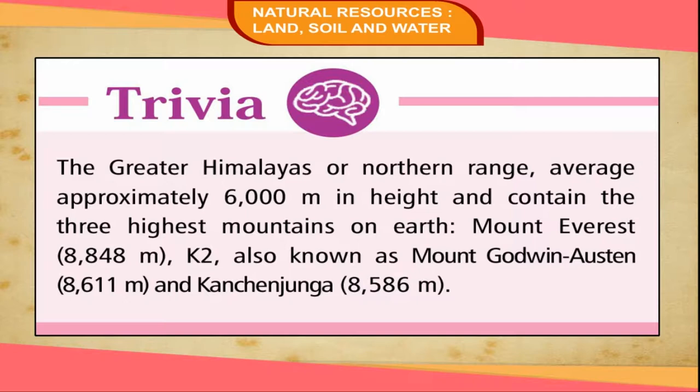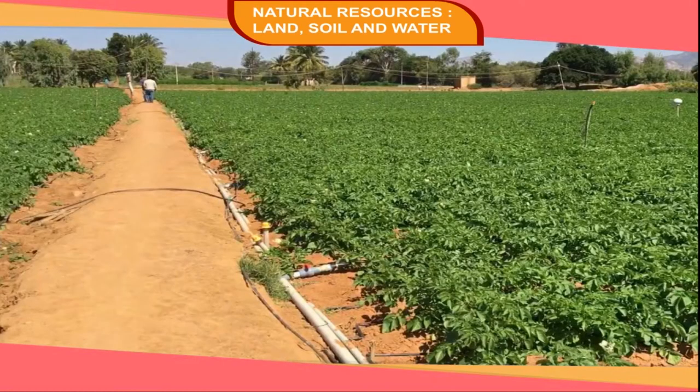The Greater Himalayas or Northern Range average approximately 6,000 meters in height and contain the three highest mountains on earth: Mount Everest at 8,848 meters, K2 (also known as Mount Godwin-Austen) at 8,611 meters, and Kangchenjunga at 8,586 meters.